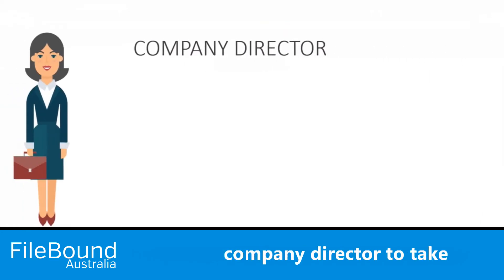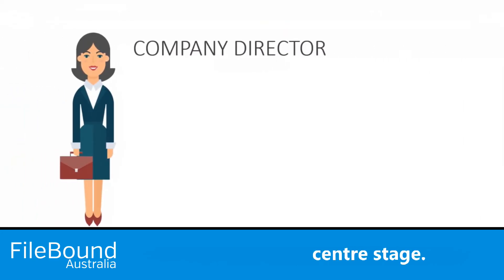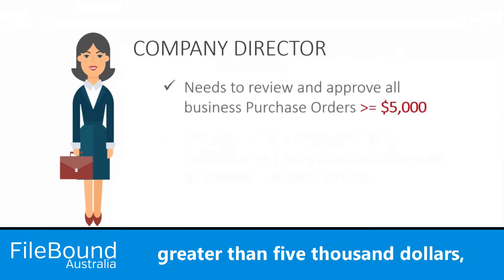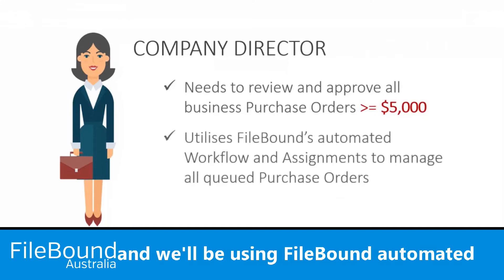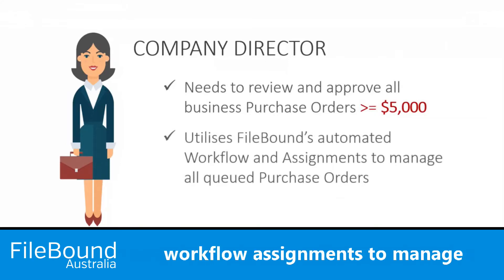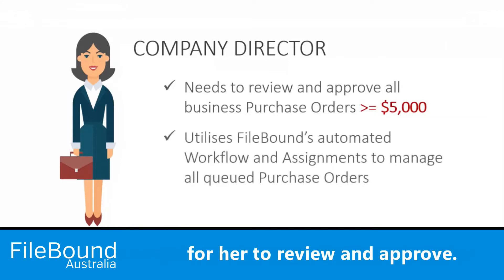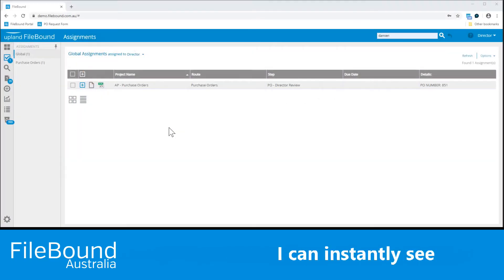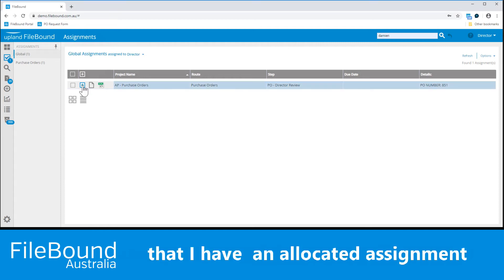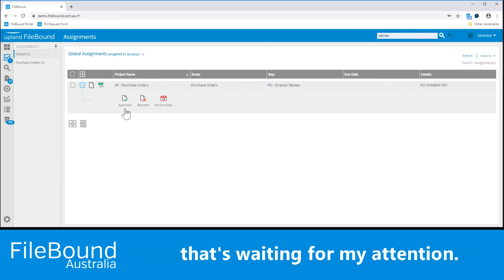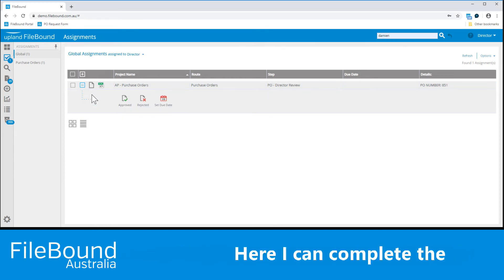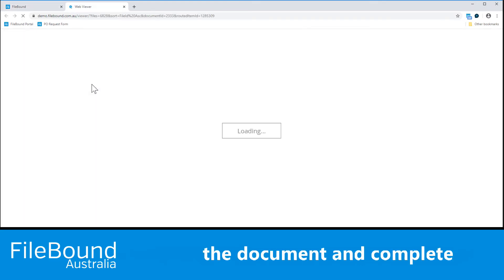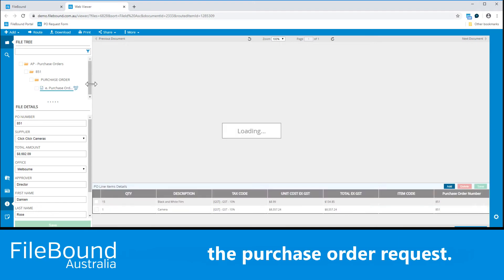Now it's time for our Company Director to take centre stage. She'll be reviewing and approving all purchase orders that are greater than $5,000, and we'll be using Filebound automated workflow assignments to manage those queued purchase orders for her to review and approve. Jumping into Filebound as the Company Director, I can instantly see that I have an allocated assignment that's waiting for my attention. I can complete the workflow at a high level, or I can actually open up the document and complete the file when reviewing the purchase order request.